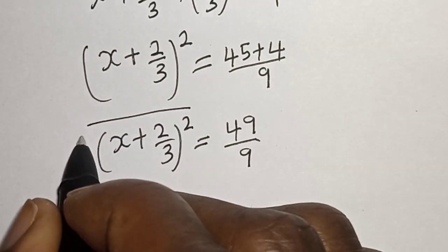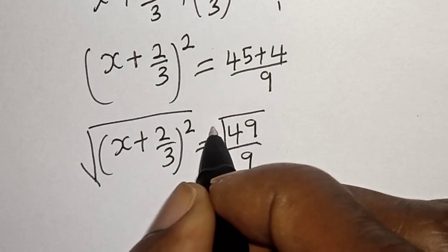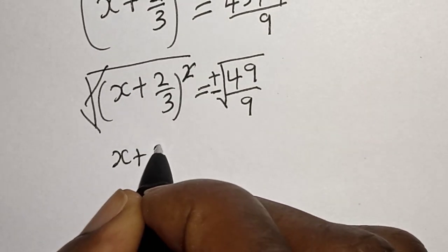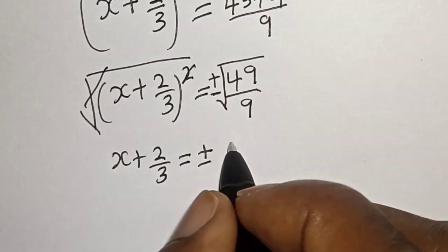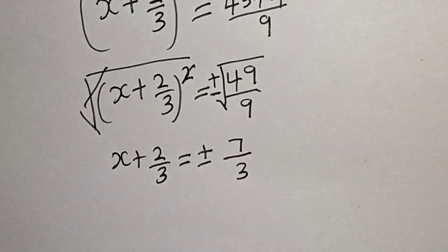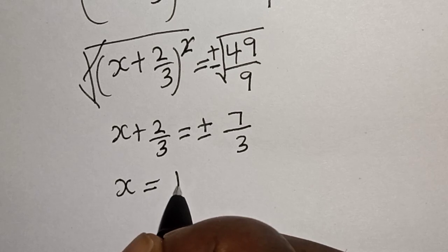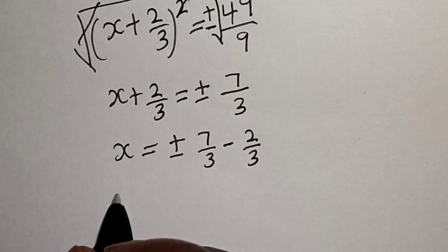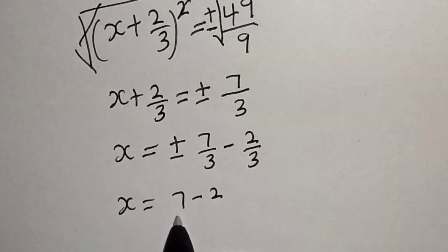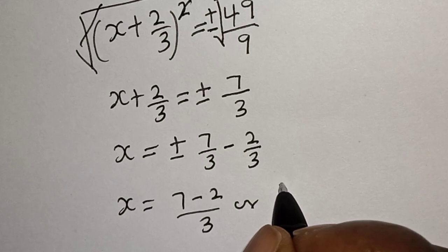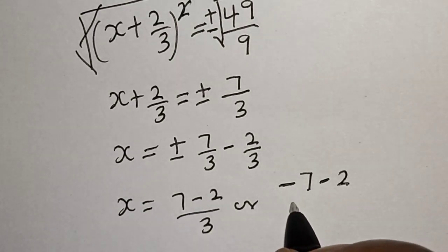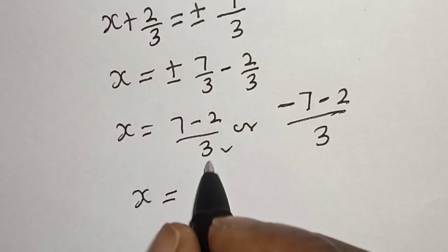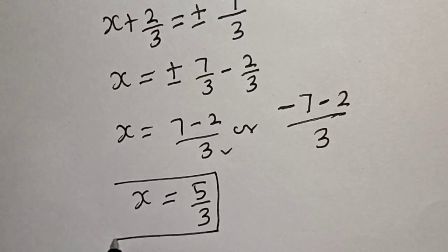Let's take the square root of both sides. The square root cancels, and we have x + 2/3 = ±√(49/9). The square root of 49 is 7 and the square root of 9 is 3, so x + 2/3 = ±7/3. Therefore x = ±7/3 - 2/3. From the positive case: x = (7 - 2)/3 = 5/3. That is one value of x.